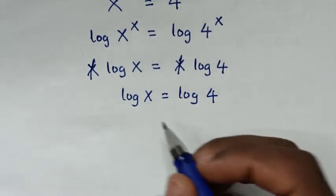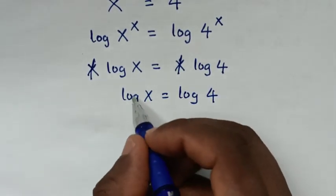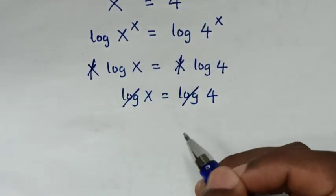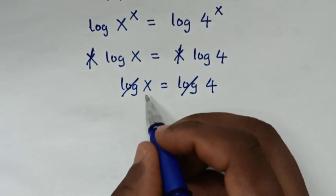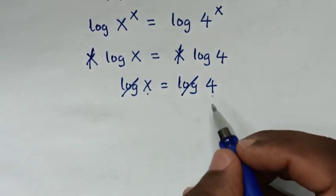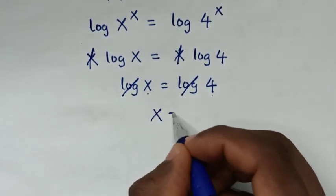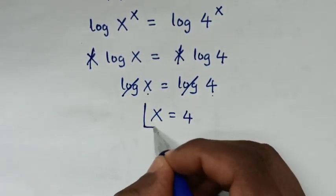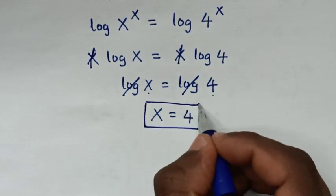Also, log is on both sides, so this log and this log will cancel. Then it will be x is equal to 4. Therefore, this is our final answer.